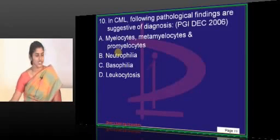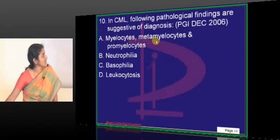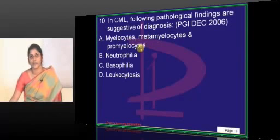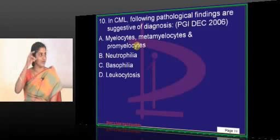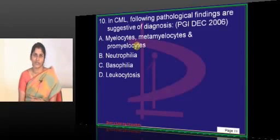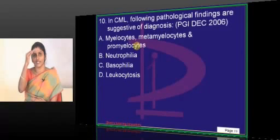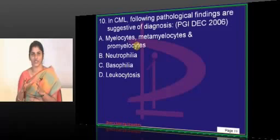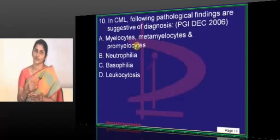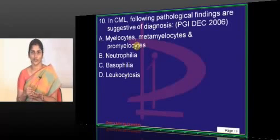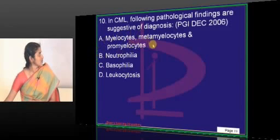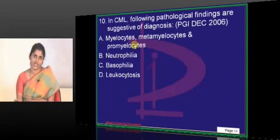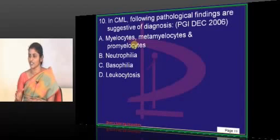Myelocytes, metamyelocytes, and promyelocytes are all precursors of neutrophils. The differentiation stages of myeloid cells go from committed cell to myeloid progenitor, then myeloblast, promyelocyte, myelocyte, metamyelocyte, band form or staff form, and finally polymorphonuclear cells or neutrophils. So all these are precursors of neutrophils, and you will find more immature cells in the peripheral smear apart from an increase in total cell count.